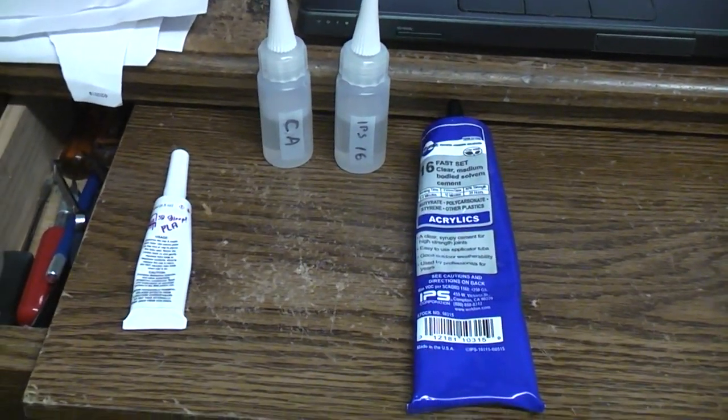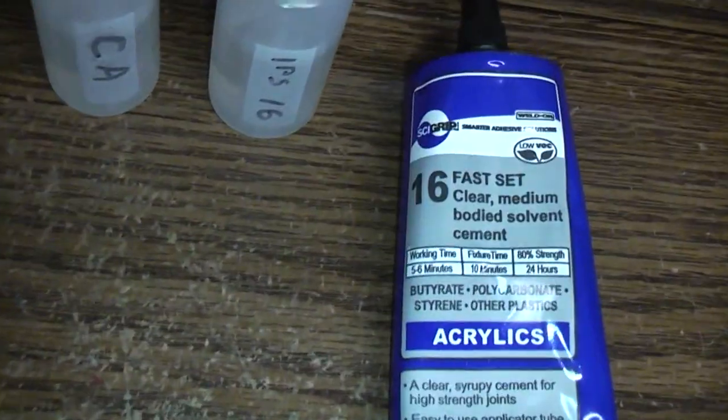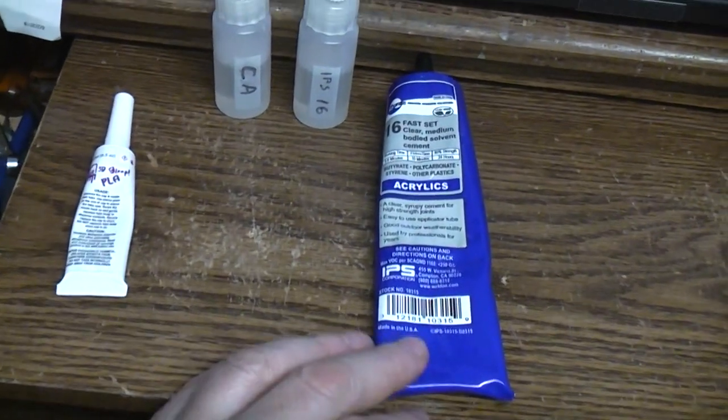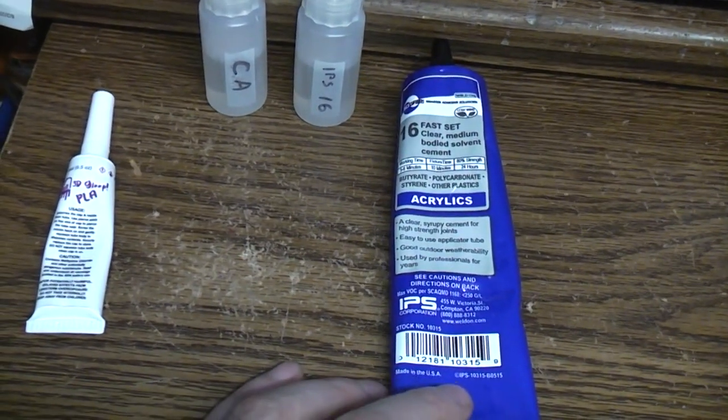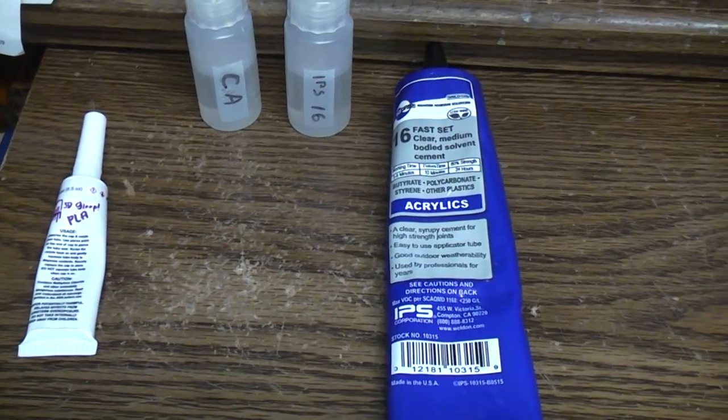So I saw a few YouTubes on guys that were using the Weldon number 16, so I decided to get some for myself. I found on Amazon you can get this big tube of it, it's five ounces, and with shipping it cost me like 17 bucks.